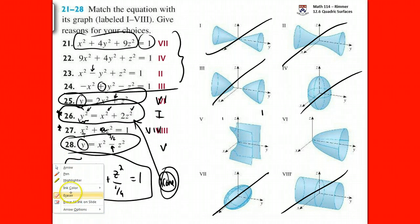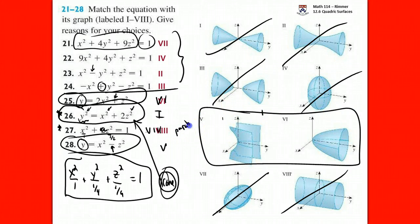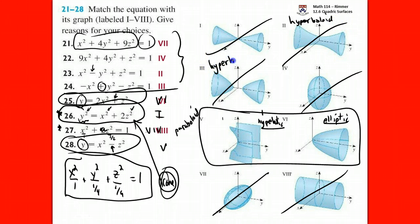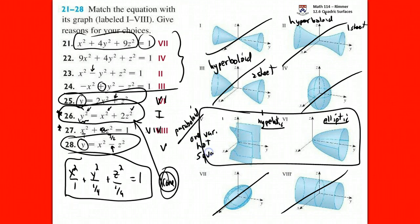Both questions 31 and 32 are called paraboloids. The difference is that one is elliptic and the other is hyperbolic. Question 32 is a hyperbolic paraboloid (the saddle), and question 31 is an elliptic paraboloid. The hyperboloids are separate shapes — the one-sheet and the two-sheet. A paraboloid is defined by having one variable that is not squared.